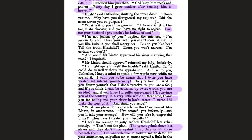There's a notable line: 'the tyrant grinds down his slaves and they don't turn against him — they crush those beneath them.' This expresses Heathcliff's philosophy — and references slavery, which still existed at the time. It's about how the bullied become bullies themselves, passing it down. Then Heathcliff says: 'having leveled my palace, don't erect a hovel and complacently admire your own charity' — meaning Catherine destroyed him and is now offering him something inadequate in return.